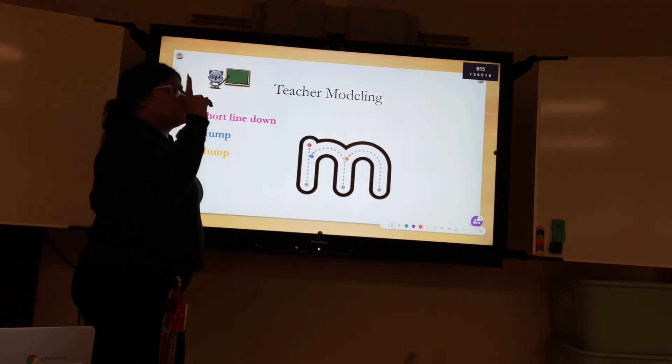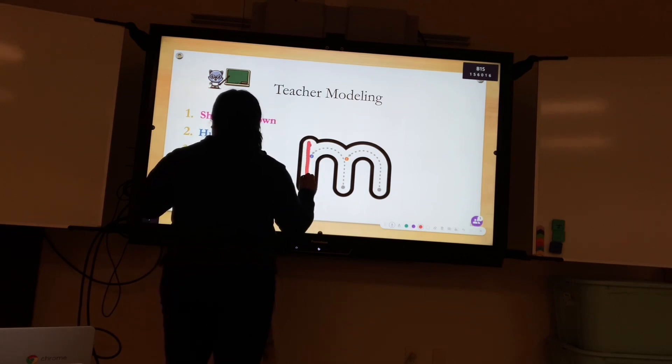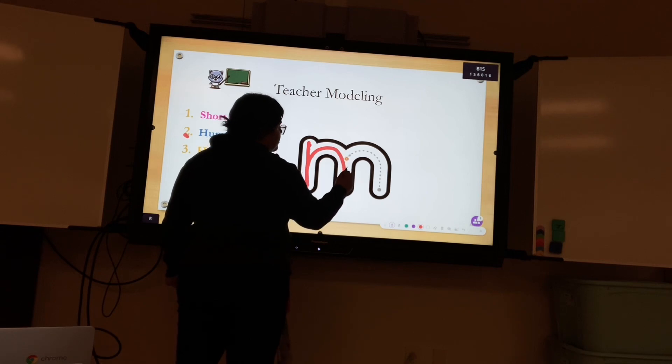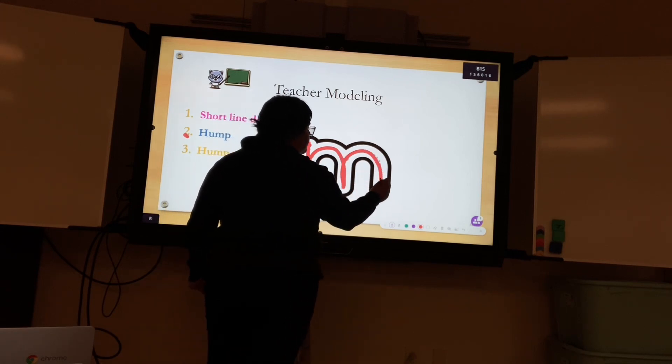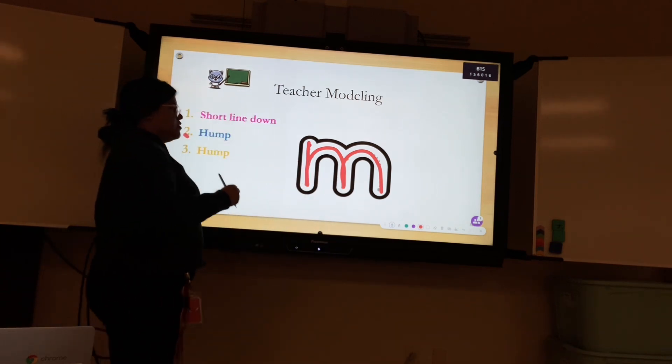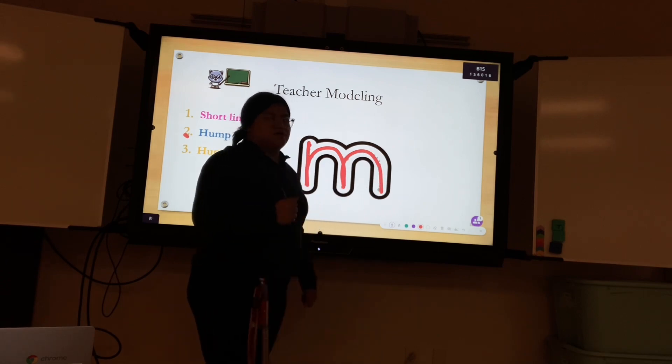So the first step. First step is for you to write a short line down. And then second step is going to be to make a hump. Third step is going to make another hump. So what is the step? Line down. Hump. Another hump.